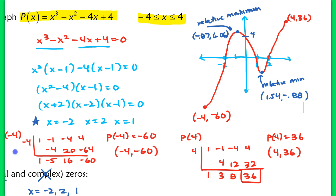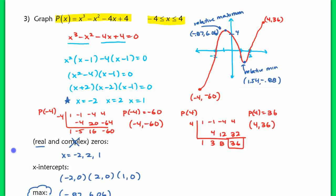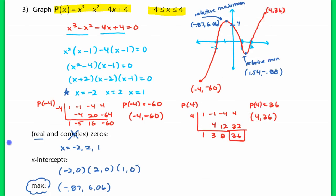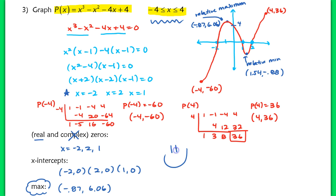That completes this problem. This is what we want to see when you're sketching: find your zeros, find the max and the min using your calculator, and give a sketch when given a specific domain. Make sure you follow these directions rather than the book's directions in your homework. That's the end of the lesson — nice job, and I'll see you guys in class tomorrow.